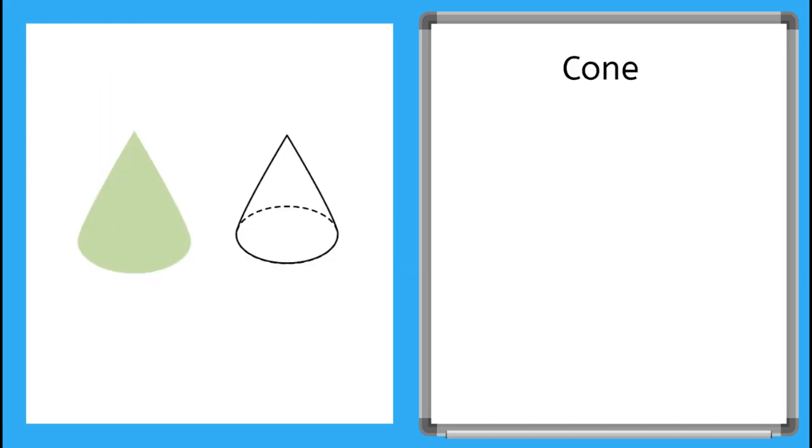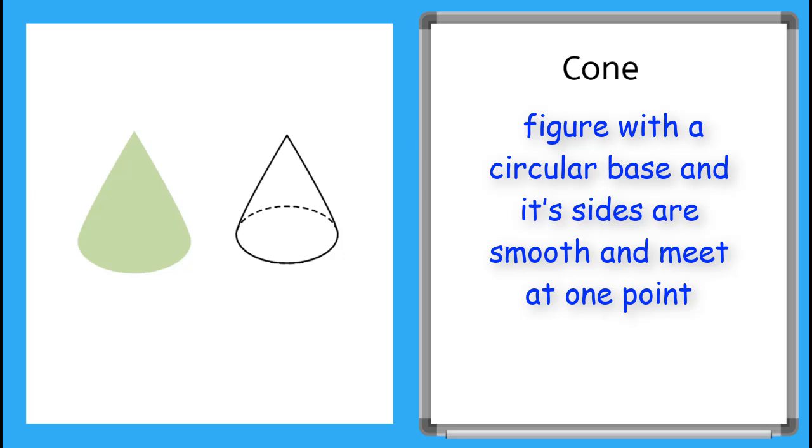Now we have a cone. A cone is a circular base and its sides are smooth and meet at one point. Notice that the sides of a cone are made up of one piece like a cylinder. What does this shape remind you of? Hmm, maybe like eating an ice cream cone?